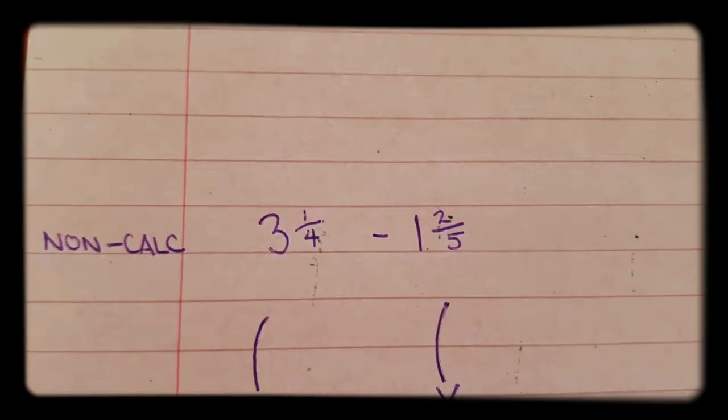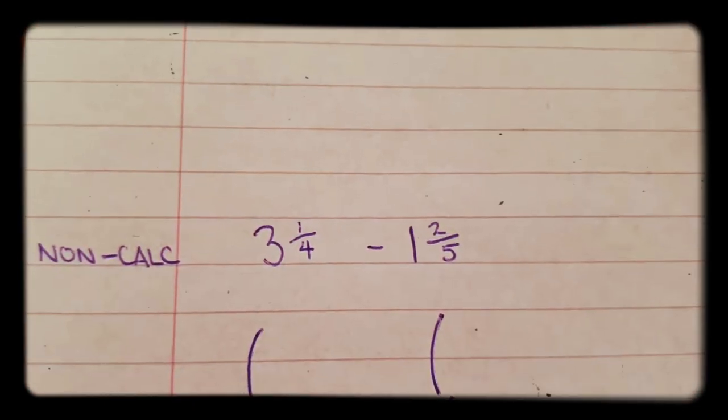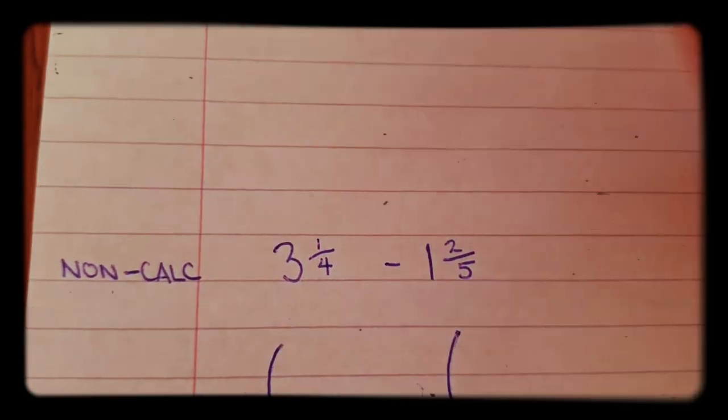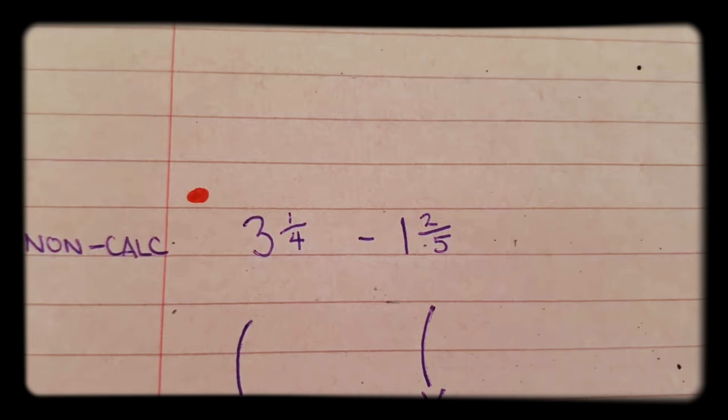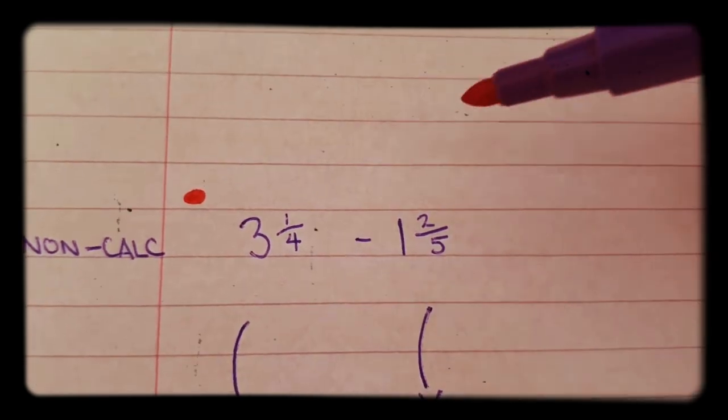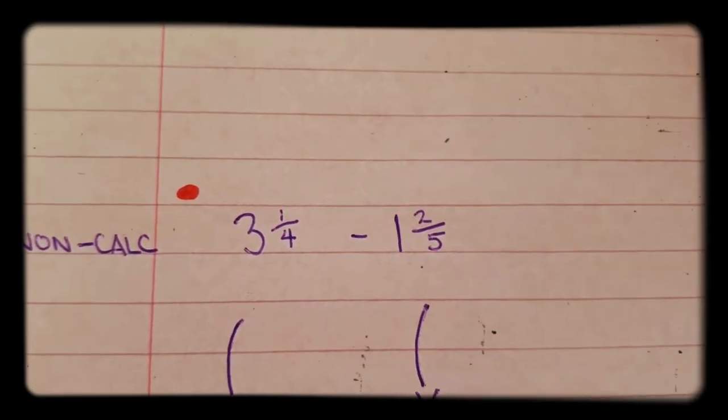In this question, we're going to be doing a fractions sum, and it's a non-calculator question. So this is how we do it. It's three and a quarters minus one and two fifths.